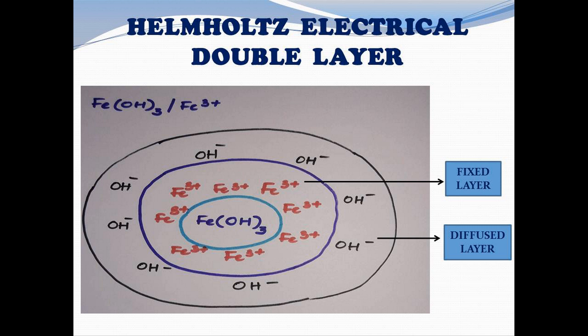In the diagram of the Helmholtz electrical double layer, we have represented ferric hydroxide salt. Ferric hydroxide is a positively charged colloidal particle due to the adsorption of Fe³⁺ ions, forming the first layer — the fixed layer. The fixed layer attracts counter ions (hydroxide ions) over it, forming the diffuse or mobile layer. Thus, around each colloidal particle we find a fixed layer and a diffuse layer, which is the basic principle of the Helmholtz electrical double layer.